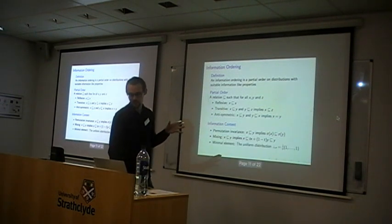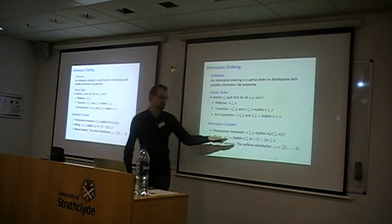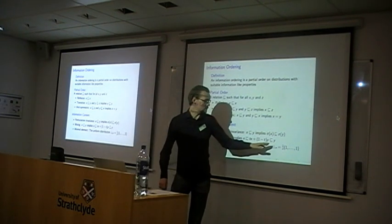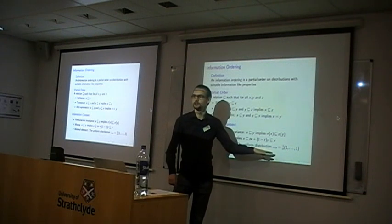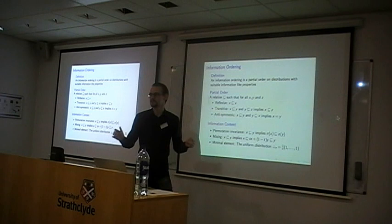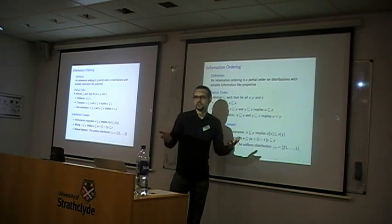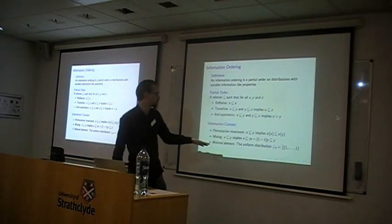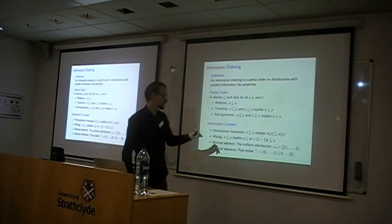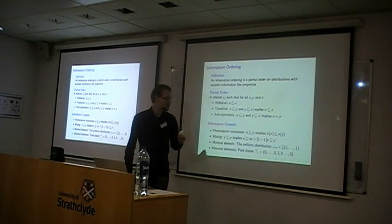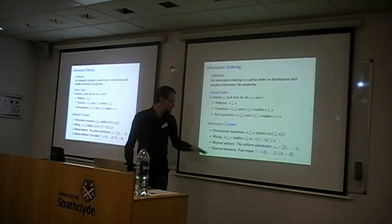We also require a certain direction on these partial orders. We require a minimal element, and the natural choice is a uniform distribution. If we represent words as distributions, then a word with a uniform distribution would give you no information at all, because it occurs in any context the same way — a possible candidate would be 'duh.' On the other hand, the maximal elements would be states that only occur in one specific context, because if that word appears in your sentence you would instantly know the context. So the maximal elements are the pure states.